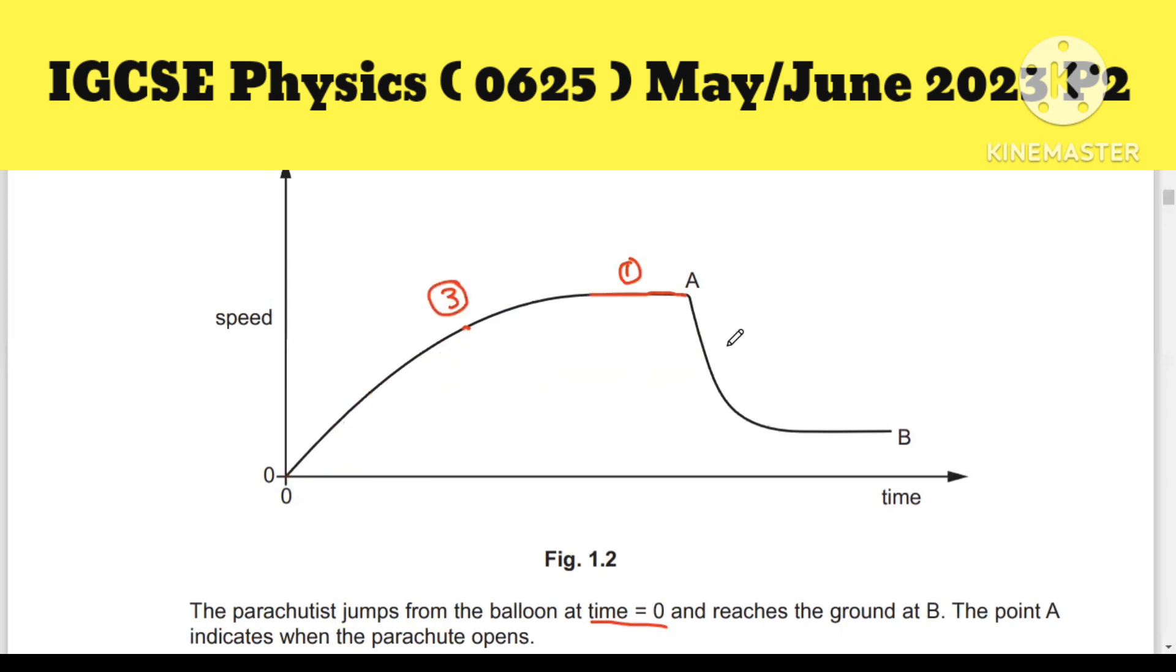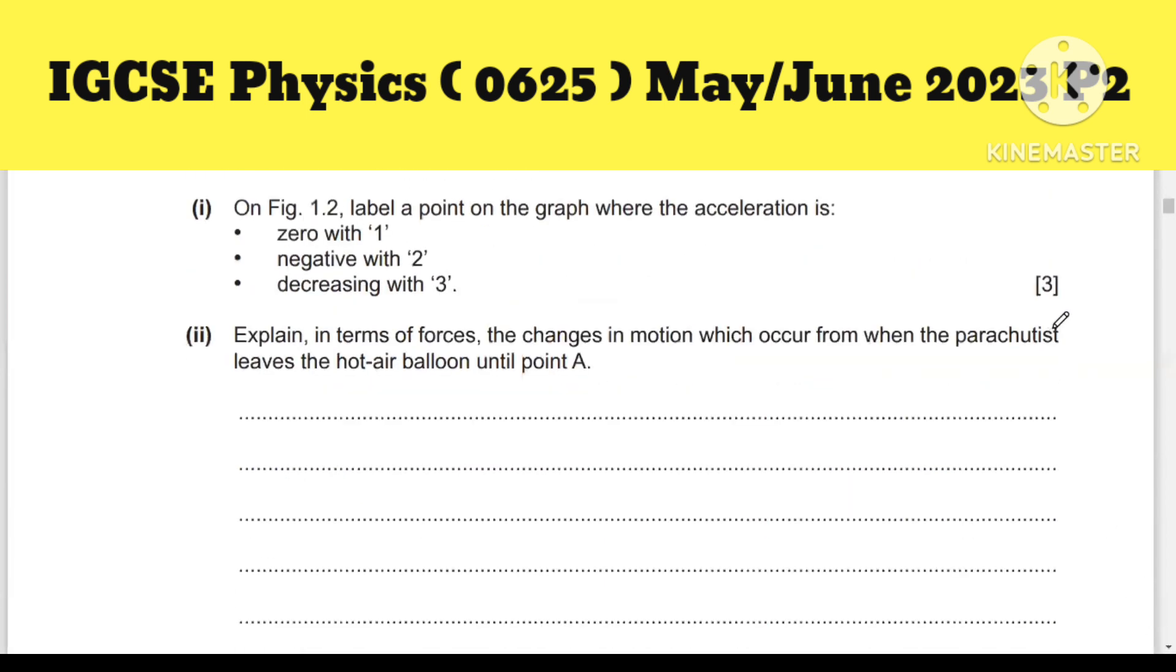When the parachute opens suddenly at a point, this is also a straight line, which is 1. Where is 2? Number 2 means negative deceleration, so at this point the object experiences retardation. This is point 2. You will get three marks.